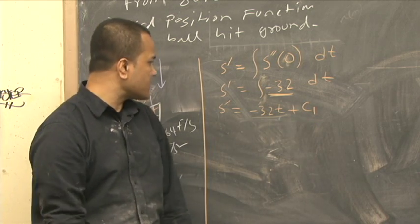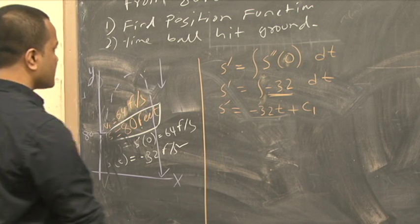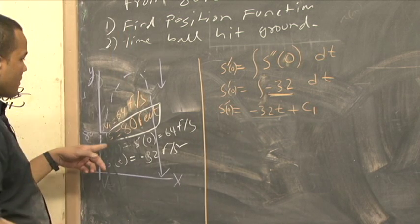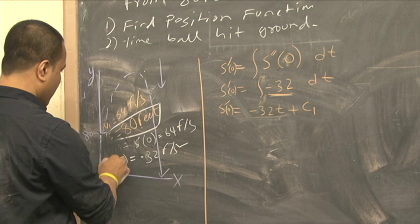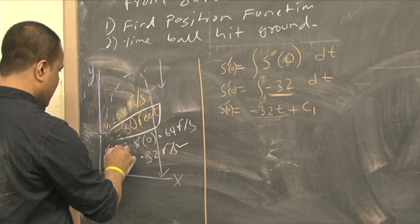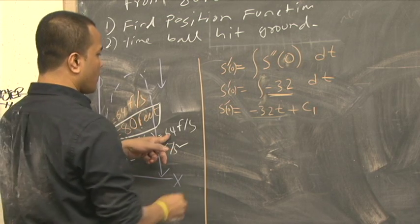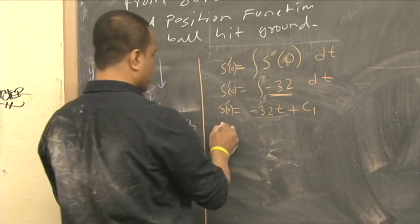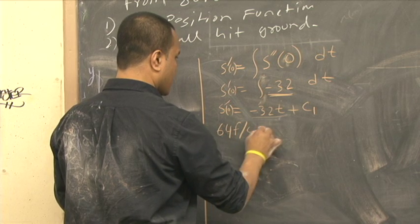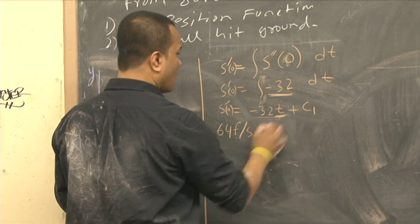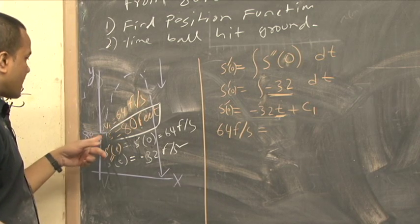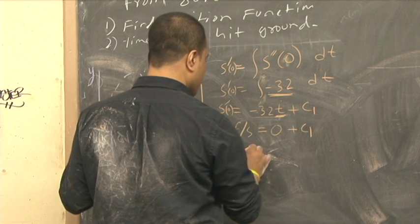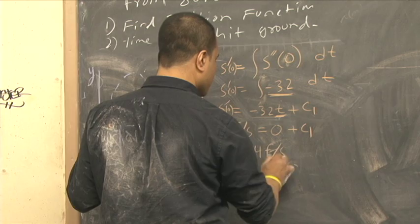But we'll be able to find c1. S prime of 0 is 64 feet per second, so 64 equals 0 plus c1. So c1 is 64 feet per second.